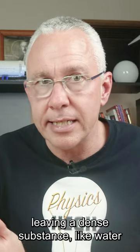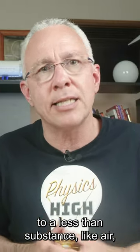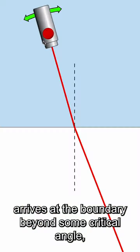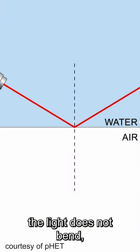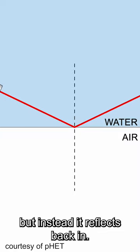But if light leaving a dense substance like water to a less dense substance like air arrives at the boundary beyond some critical angle, the light does not bend but instead reflects back in.